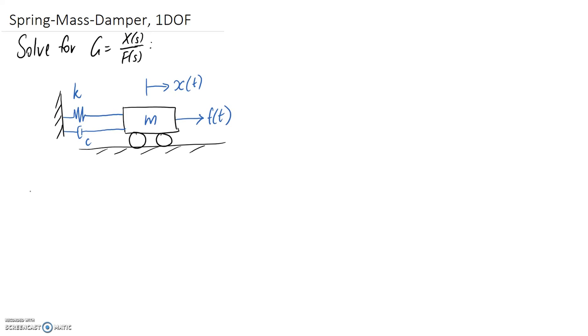So to start off all these questions, the first thing that you always want to do is draw a free body diagram of each mass in your system. And in our case, we only have one, so we only need to draw one free body diagram.